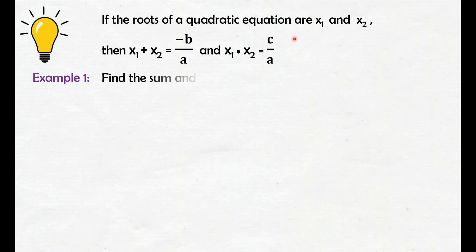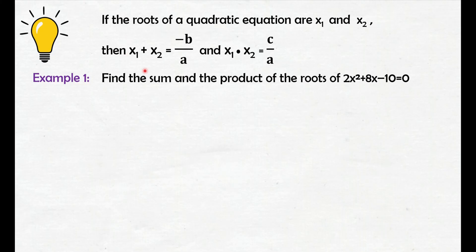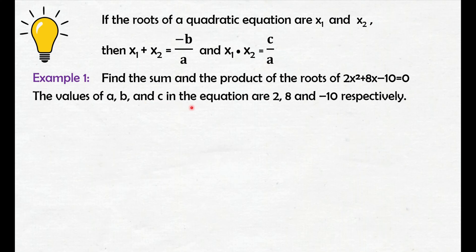Let's give an example. Find the sum and the product of the roots of 2x squared plus 8x minus 10 equals 0. The question here is: what is the sum and product of the roots? It is not asking us to find what the roots are — it is asking for the sum and product of the roots of the given quadratic equation. The values of a, b, and c in the equation are 2, 8, and negative 10 respectively.